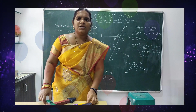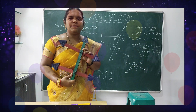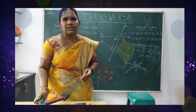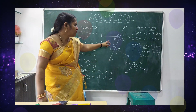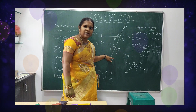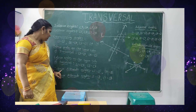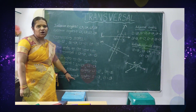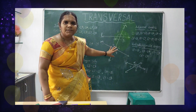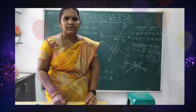This is about a transversal for any two lines in a plane surface. A transversal is a line that intersects two or more lines at different points. When a transversal intersects two lines, we have eight angles: four interior angles, four exterior angles, four pairs of corresponding angles, two pairs of interior alternate angles, and two pairs of exterior alternate angles. I hope you understood. Based on this, prepare notes and write down all the points. Thank you.